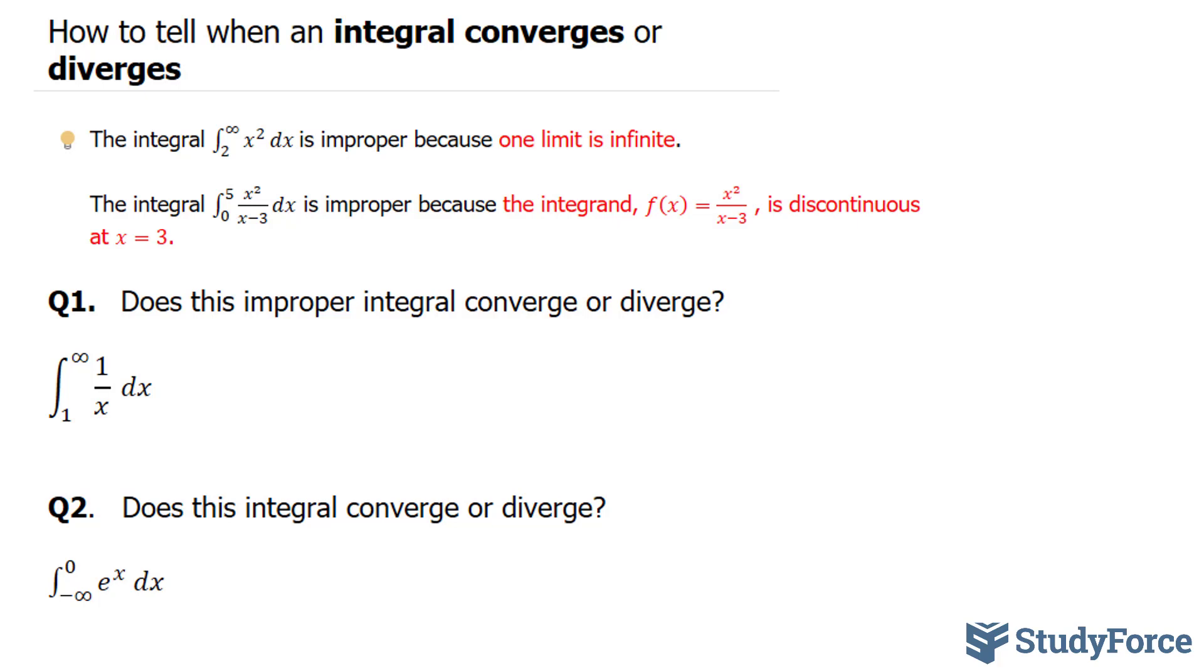Take, for example, the integral x to the power of 2 dx between 2 and infinity. This integral is improper because one of our bounds is infinity.